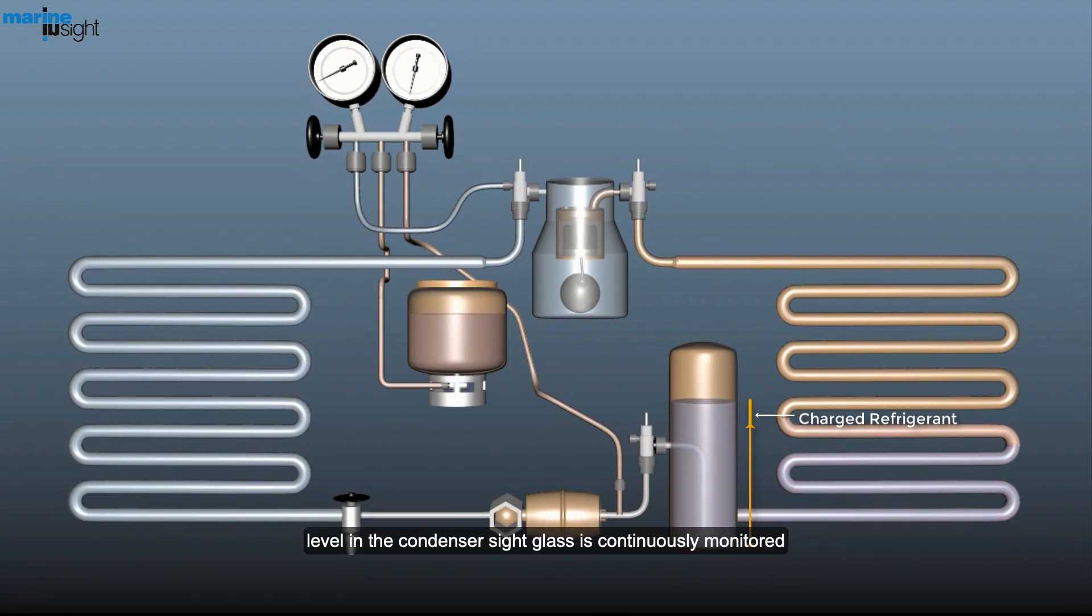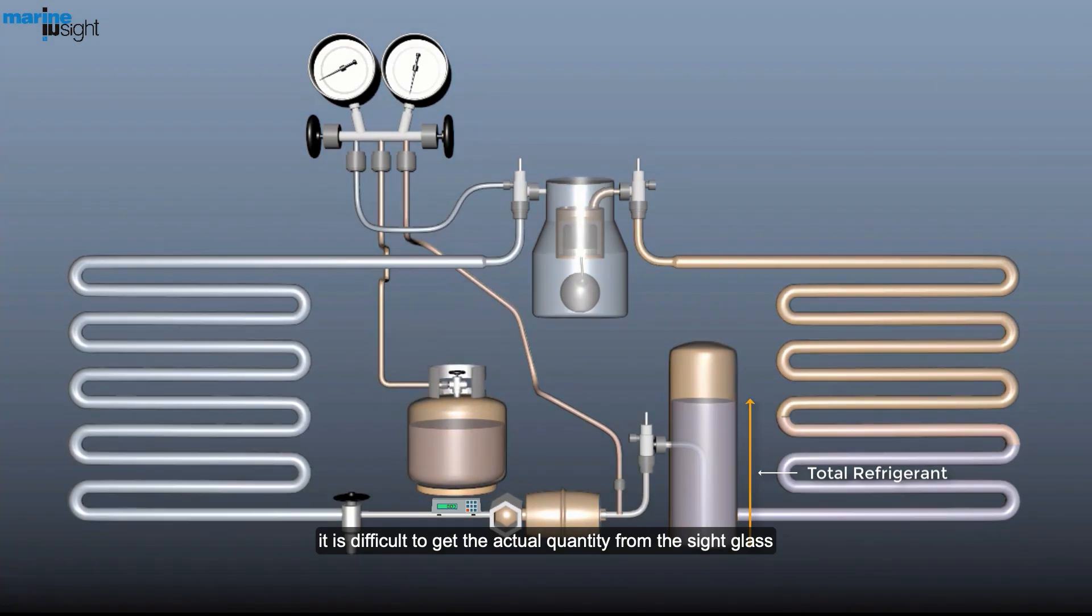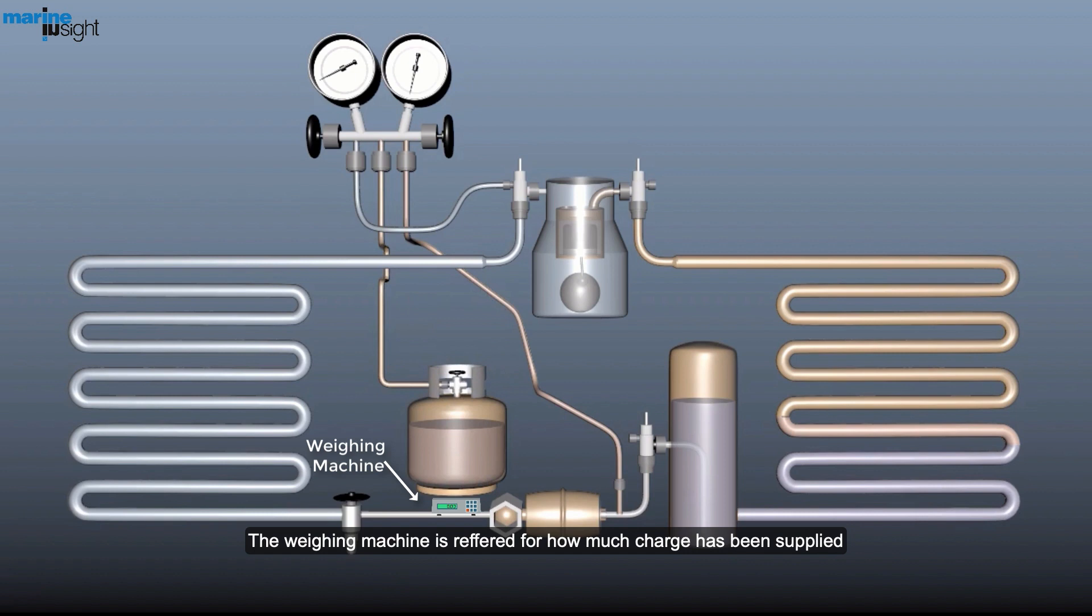The level in the condenser sight glass is continuously monitored. As the refrigerant is still circulating in the circuit, it is difficult to get the actual quantity from the sight glass. The weighing machine is referred to for how much charge has been supplied.